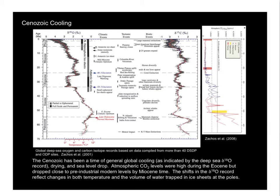Note the short, sharp excursion right at the Paleocene-Eocene boundary — that's the Paleocene-Eocene thermal maximum event. After the Eocene climate optimum, there's a long gradual cooling trend until there's a sharp drop at the Eocene-Oligocene boundary. That coincides with the earliest evidence for the formation of ice sheets on Antarctica.